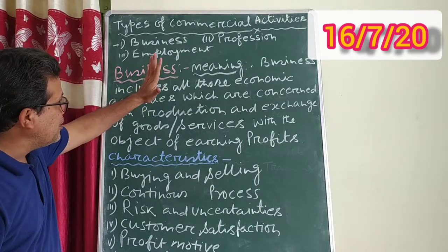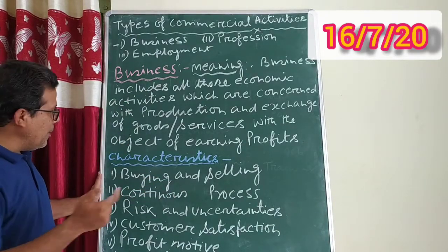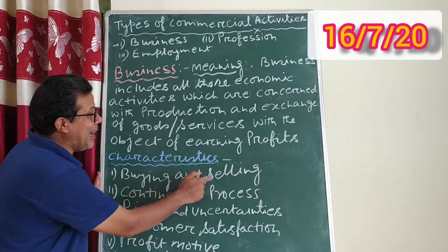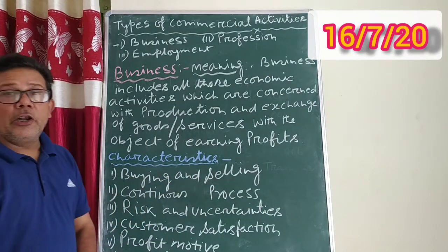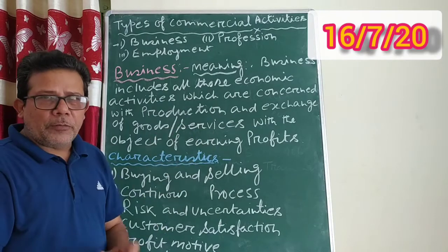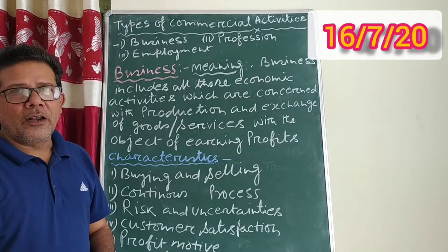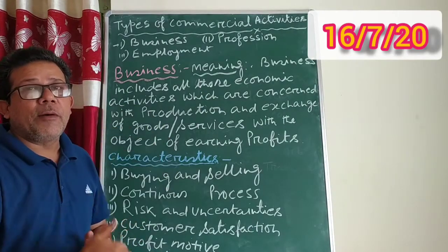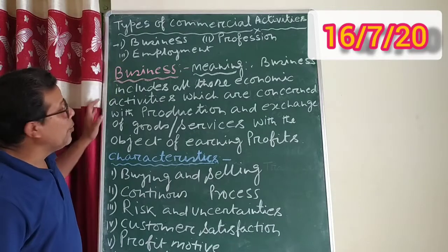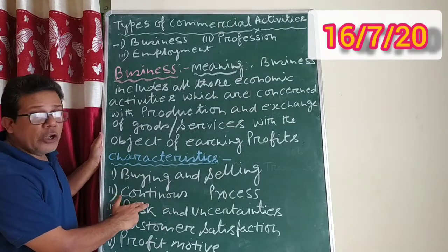From the definition, we can identify the characteristics of business. The first characteristic is buying and selling. The second is that business is a continuous process — once you produce something, you do not stop. You continuously produce day by day, and buying and selling goes on every day.